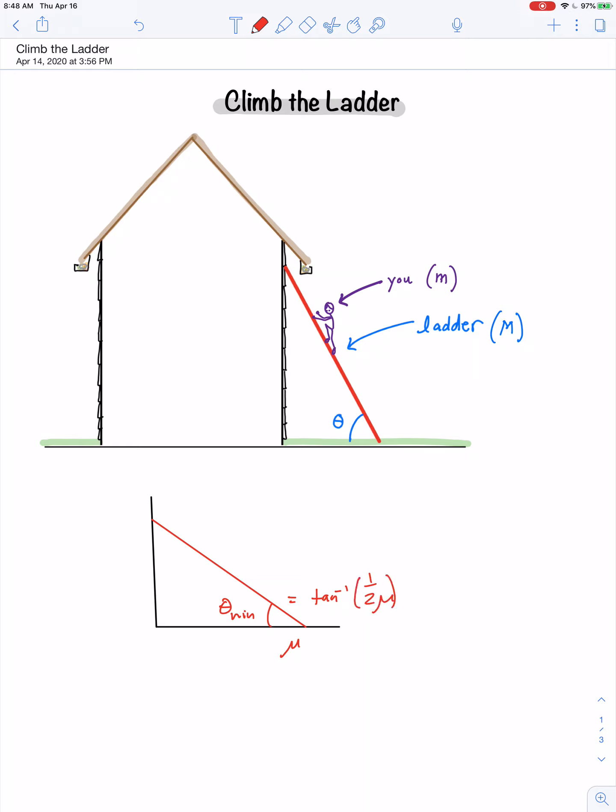For example, if the coefficient of friction is equal to, maybe it rained so the grass was wet and it decreases the coefficient of friction down to something like 0.75, well grab your calculators and check and see if you agree that corresponds to a minimum safe angle of about 33.7 degrees.